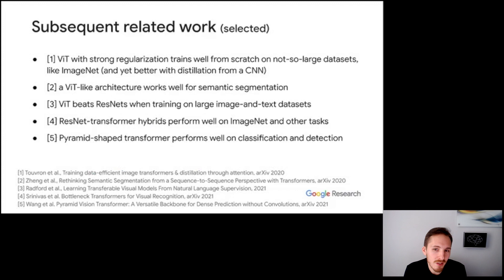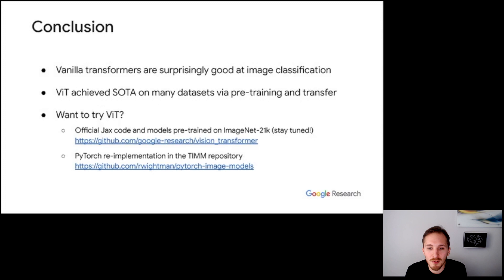Since ViT came out, there have been quite a lot of research based on it or inspired by it. Here we mentioned just a few selected examples. Touvron and colleagues have shown that with strong regularization, ViT can be trained from scratch on not-so-huge datasets like ImageNet, and they have also shown that distillation from a convnet gives some additional benefit. Zheng et al. applied a ViT-like architecture to semantic segmentation. Radford and colleagues have shown that vision transformers outperform ResNets when trained on large image and text datasets. Srinivas et al. have explored ResNet-transformer hybrids and have shown that this can work very well on ImageNet and other tasks. Finally, Wang and colleagues explored a pyramid-shaped ViT with feature map resolution gradually decreasing towards the deeper layers, and they have shown that this model can work very well on classification and detection.